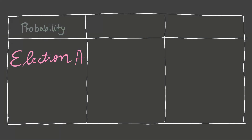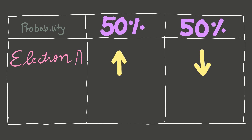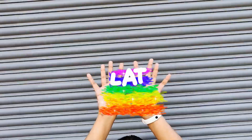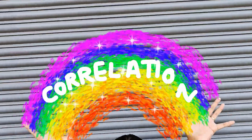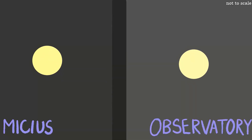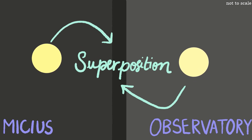Meaning, if electron A had 50-50 of spin up or down, electron B would be 50-50 of spin down or up. And that's correlation. In the trial, the photons, which are also quantum particles, were in a superposition of states too.